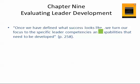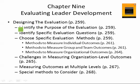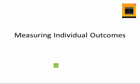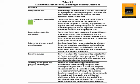Once we've identified what success looks like, we focus on the specific leader competencies and capabilities that need to be developed. When designing the evaluation, identify the purpose, identify specific evaluation questions, and choose specific evaluation methods — for example, methods to measure individual outcomes, group outcomes, or organizational outcomes. For measuring individual outcomes, you might use daily evaluations or end-of-program evaluations, like those used in a course.